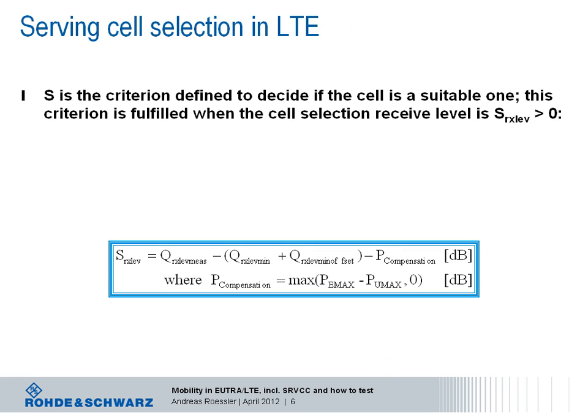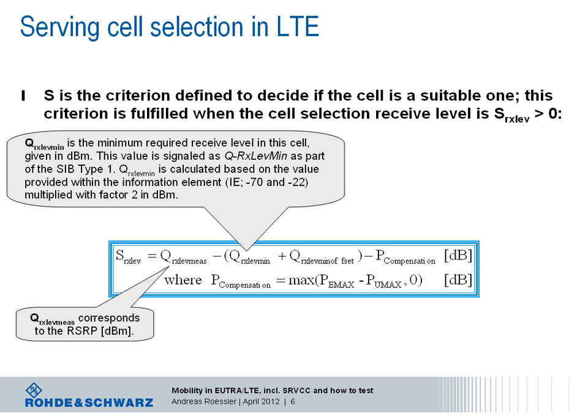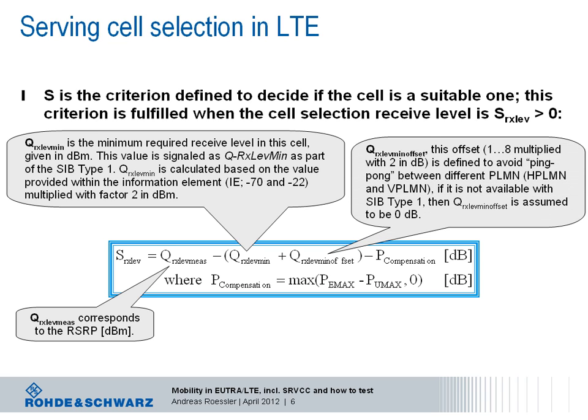The cell selection criteria definition is shown in this equation. It is fulfilled — meaning the device will camp on this cell — if the reception level RxLev is greater than zero. This reception level is computed based on measurements taken on the received quality of the serving cell, as well as cell-specific information provided by SIB type 1. The first part is the QRx level measurement, which corresponds to the reference signal receive power RSRP, expressed in dBm. The next value is the minimum level in this cell — QRx level minimum — given in dBm, and could be in the range of minus 70 to minus 22, multiplied by 2.